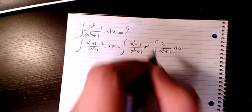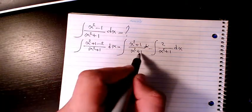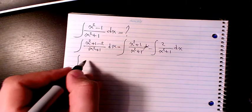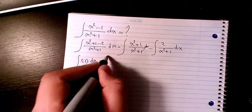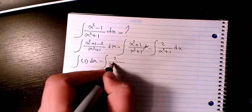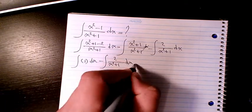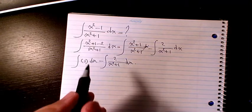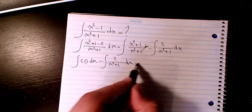Here we have dx as well. So since the numerator and denominator are the same, it's going to be 1 minus 2 over x square plus 1 dx. The integration of the first one is going to be just x.